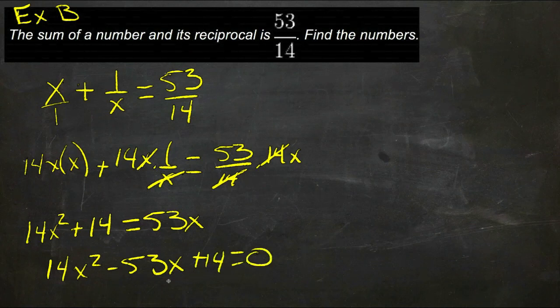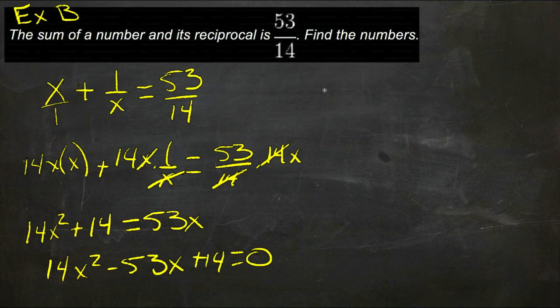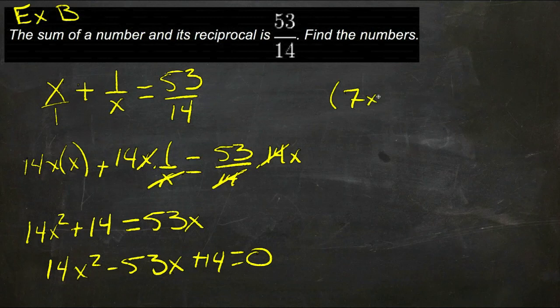Now we can factor this, this is a trinomial, so if we factor it we end up with, looks like 7x minus 2 times 2x minus 7, that equals 0.